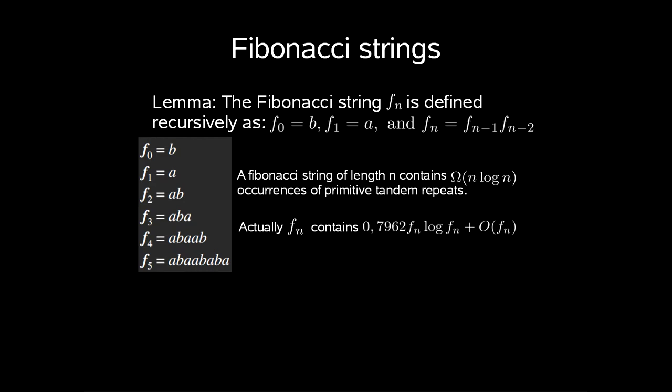Fibonacci strings are highly repetitive. But how high is that? Well, we have a theorem stating a Fibonacci string of length n contains at least n log n occurrences of primitive tandem repeats. Well actually, this is 0.7962 f_n log f_n plus O(f_n) occurrences of primitive tandem repeats, which was shown by Fraenkel and Simpson in 1999.